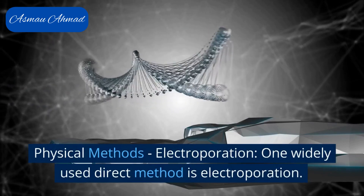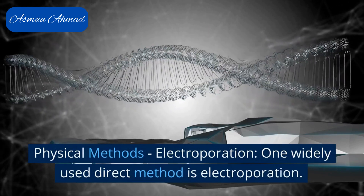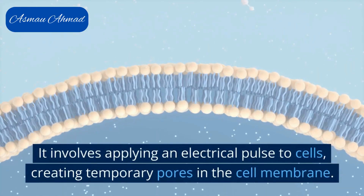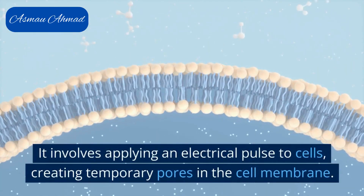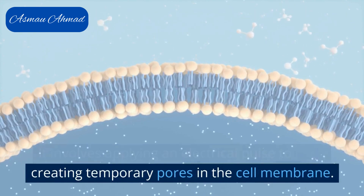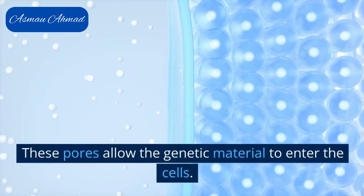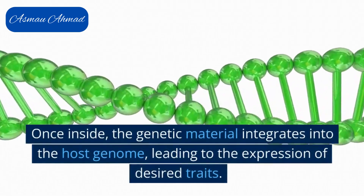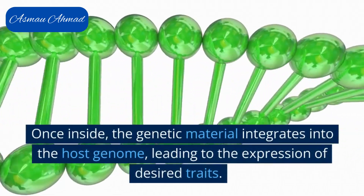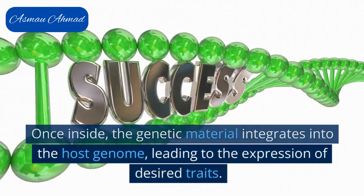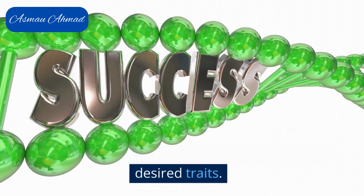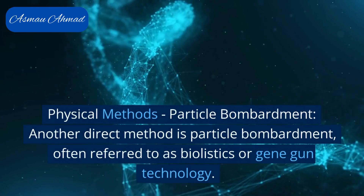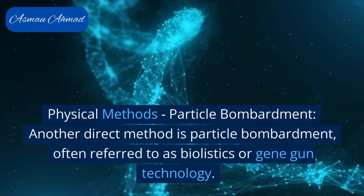One widely used direct method is electroporation. It involves applying an electrical pulse to cells, creating temporary pores in the cell membrane. These pores allow the genetic material to enter the cells. Once inside, the genetic material integrates into the host genome, leading to the expression of desired traits.